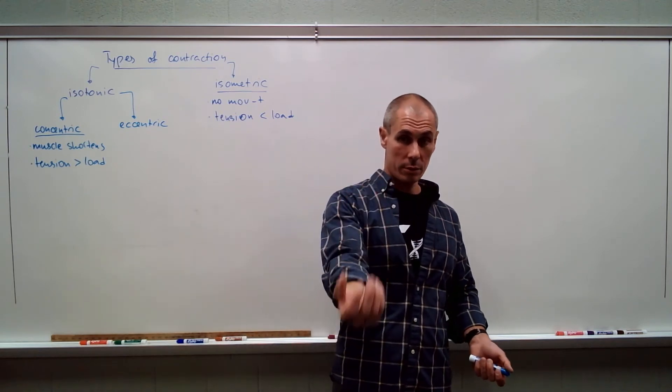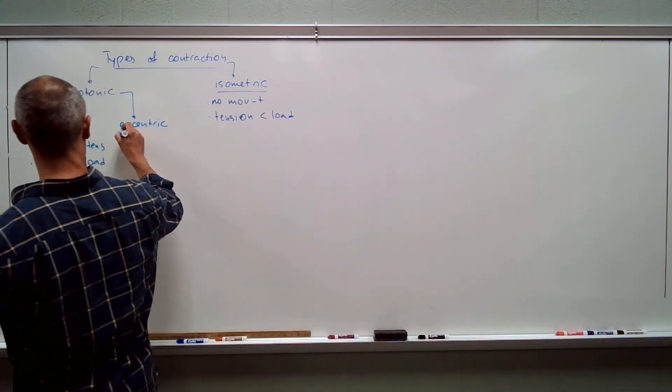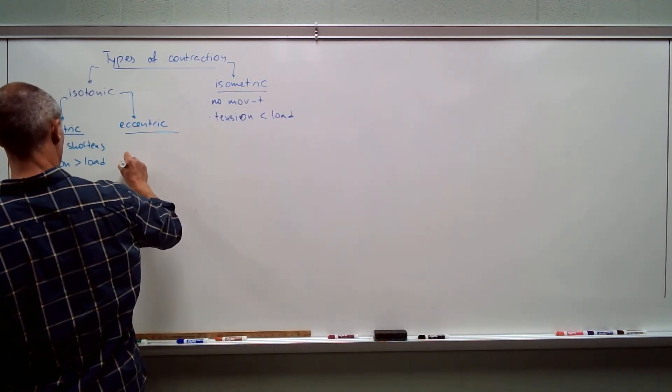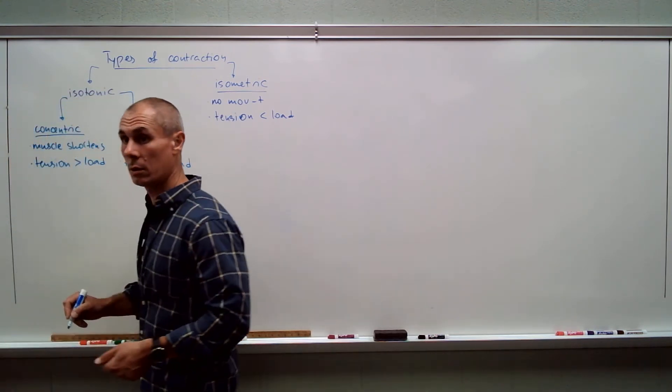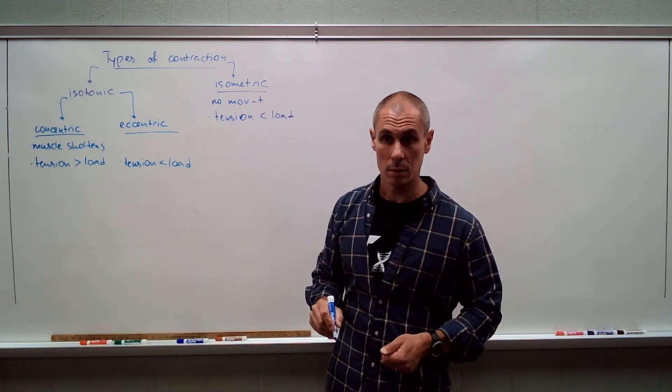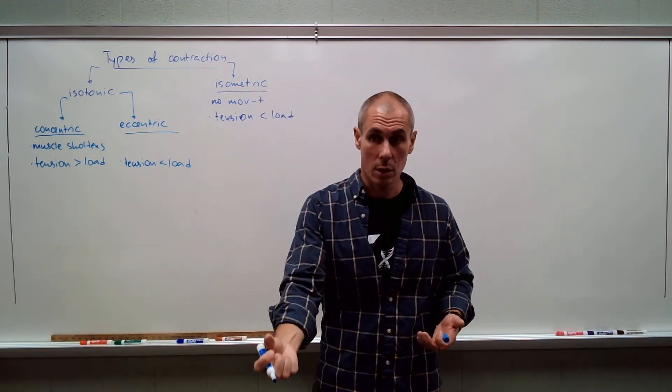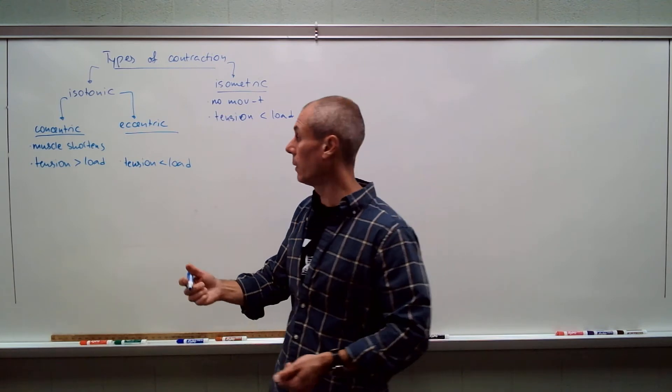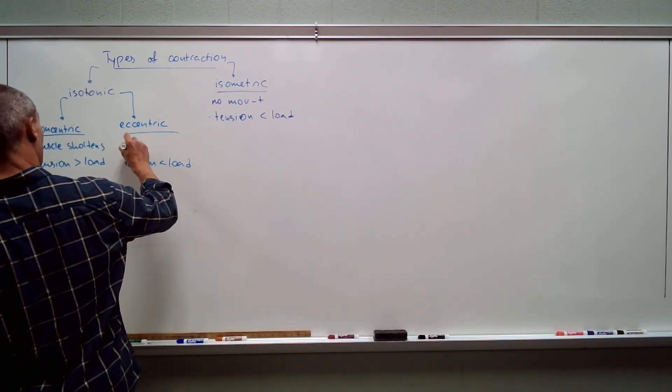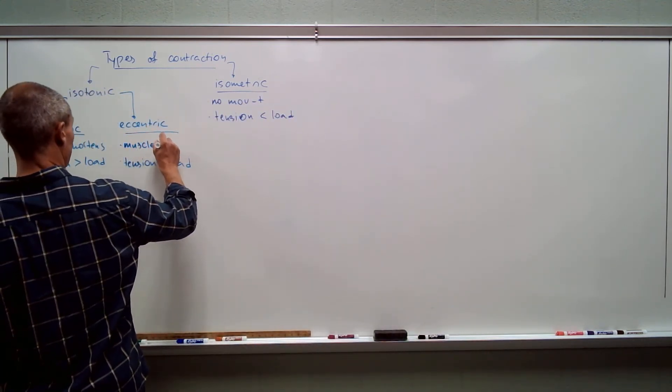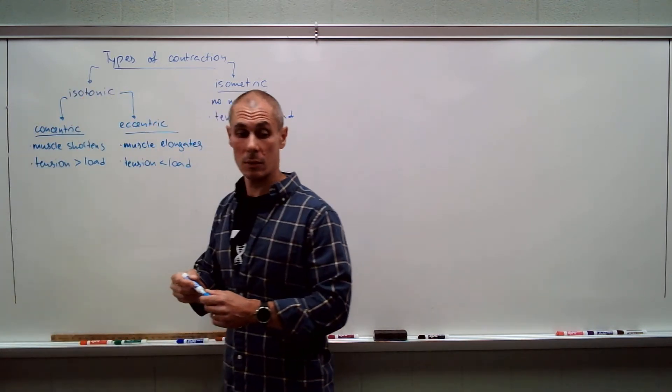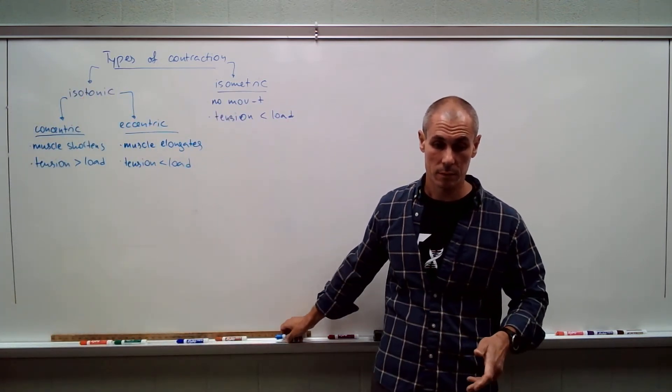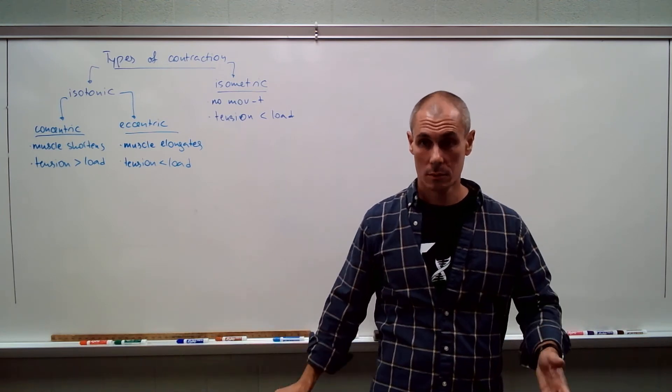When you let it go down, it goes down because tension is lower than the load. This is why it is going down. It's controlled, and the muscle elongates. Does that make sense?